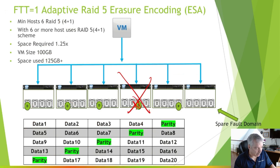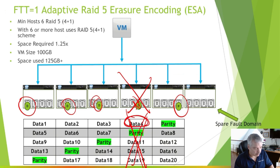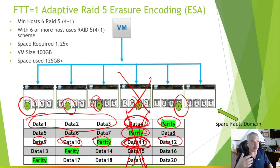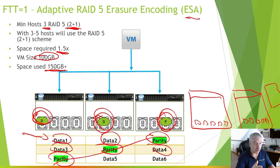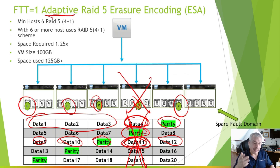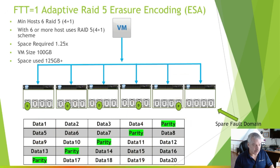With 4+1, you still have protection. If you lose a server, you still have data one, data two, data three, and a parity — you can figure out the lost data by looking at the remaining data and the parity. This all happens automatically. When you first set up your cluster with a small number of hosts it does 2+1, and as you add more hosts and hit that sixth host, it says: let's re-encode this better. That's Adaptive RAID 5.